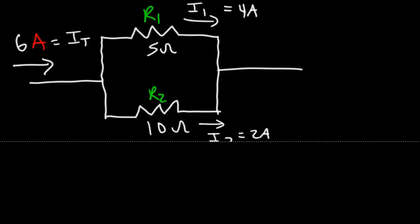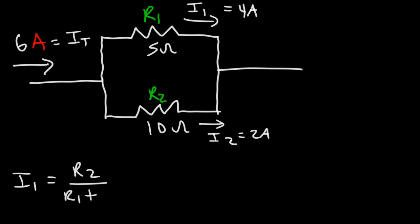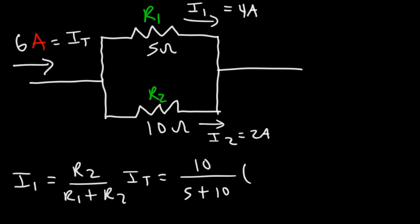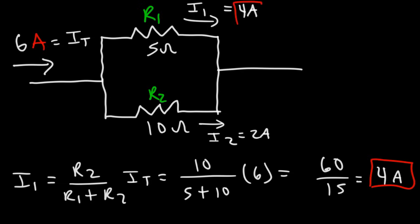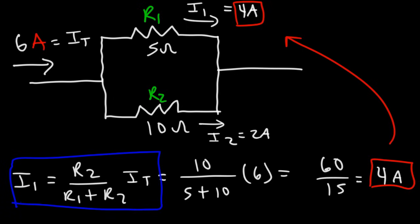There's a formula that gives the same answer: i1 = (R2 / (R1 + R2)) × It. With R2 = 10, R1 = 5, and It = 6: that's (10 / 15) × 6 = 60/15 = 4 amps. Once you have i1, you can subtract to find i2: 6 − 4 = 2 amps. This confirms the earlier result.